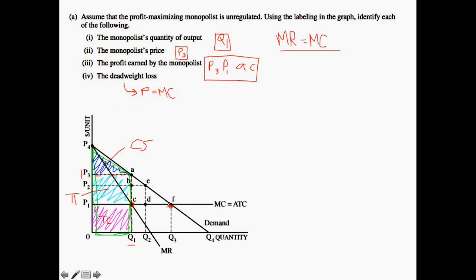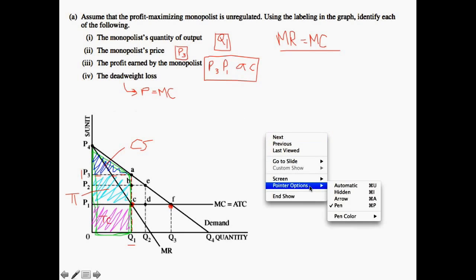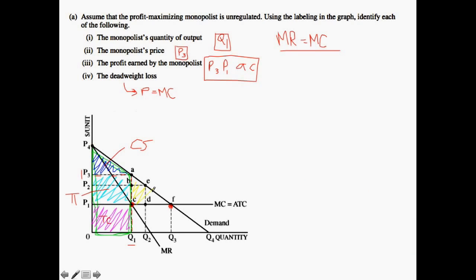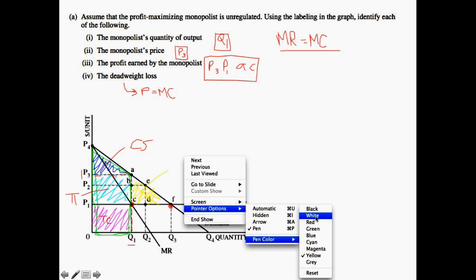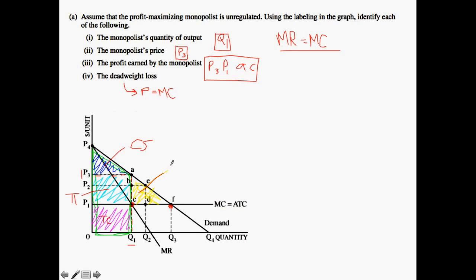But as a result of the monopolist taking a profit, the consumer surplus has decreased in the profit-maximizing monopolist situation, and therefore you have an incurred deadweight loss — a loss of economic efficiency when we are not allocating efficiently. Therefore, the deadweight loss is equal to point ACF.